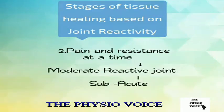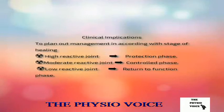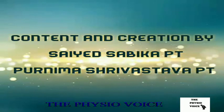If the patient experiences pain at the same time when the resistance to the passive movement is experienced by the therapist, it is suggestive of a moderately reactive joint corresponding to the subacute stage. If the therapist experiences resistance to the passive movement and then the patient experiences pain, it is suggestive of a low reactive joint corresponding to the chronic stage of healing. These are the clinical implications of joint reactivity.